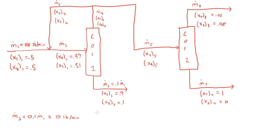Sometimes the hardest part about these problems is finding a starting point. The best thing to do is look at the streams in your process and find a balance point that incorporates the streams you know the most about. In this case, we know the mass flow rate and mass fractions of the feedstock, the mass flow rate and mass fractions of the bottom product, and the mass fractions of the top and bottom product of the second column. So we can do a material balance on the overall process, with the feedstock as the one inlet and three outlet streams, to determine the mass flow rates M.7 and M.8. We'll use two equations: an overall mass balance and a toluene balance on the system.